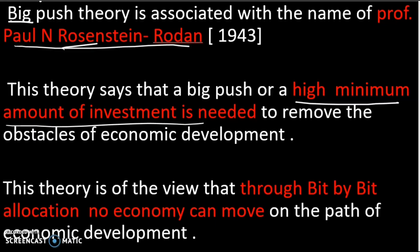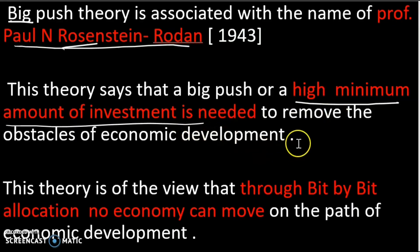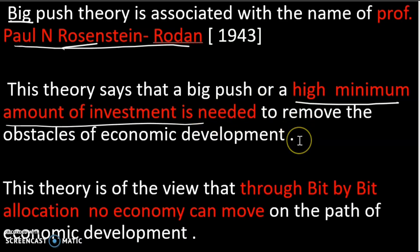The high minimum amount of investment is needed to remove the obstacles of economic development. As an example, if the required investment is maybe one billion dollars, that is a high minimum amount of investment for economic development. If it is a low minimum amount of investment, development does not occur. One way to achieve economic development is to make a high minimum amount of investment.